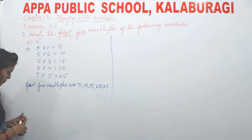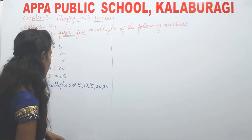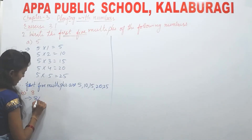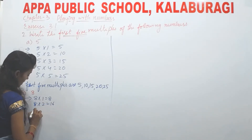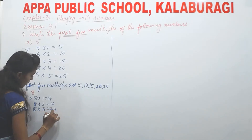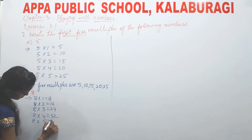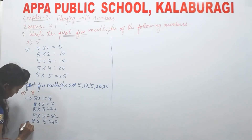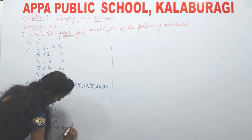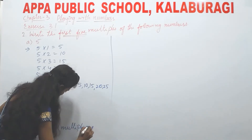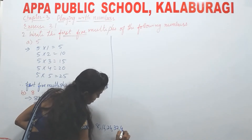Next, B is 8. 8×1=8, 8×2=16, 8×3=24, 8×4=32, 8×5=40. So therefore the first five multiples of 8 are 8, 16, 24, 32, and 40.